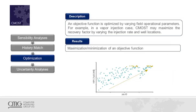CMOST will help us maximize an objective function — in our case, the net present value — so we are maximizing the money from our project. That function relates the cost and the income of the company, which I will explain in the next slides.